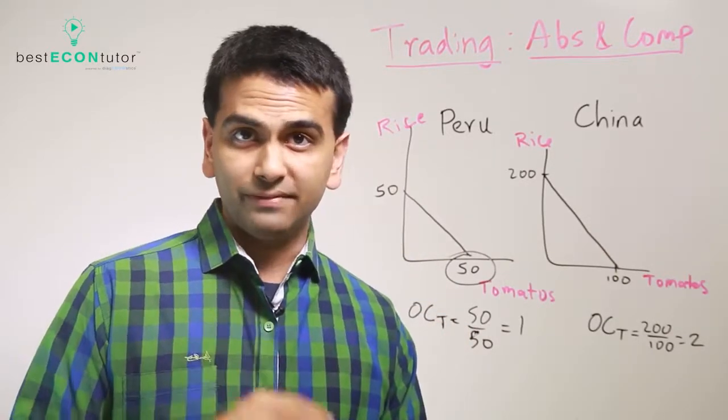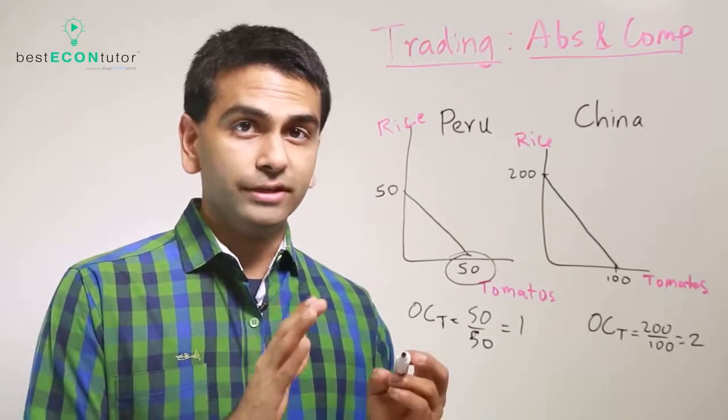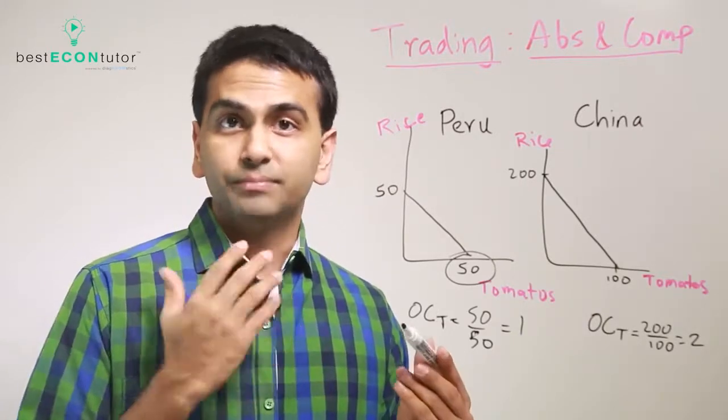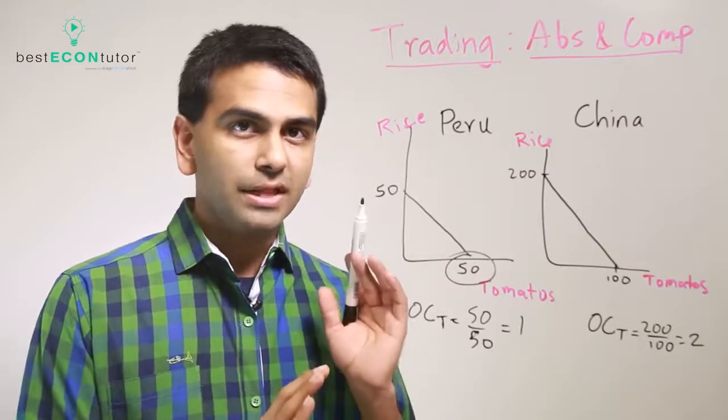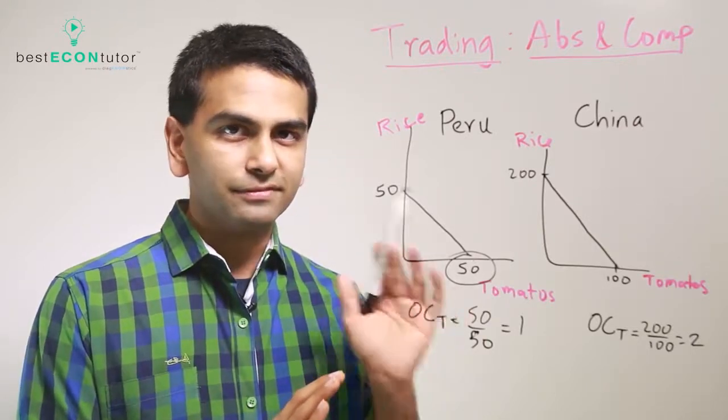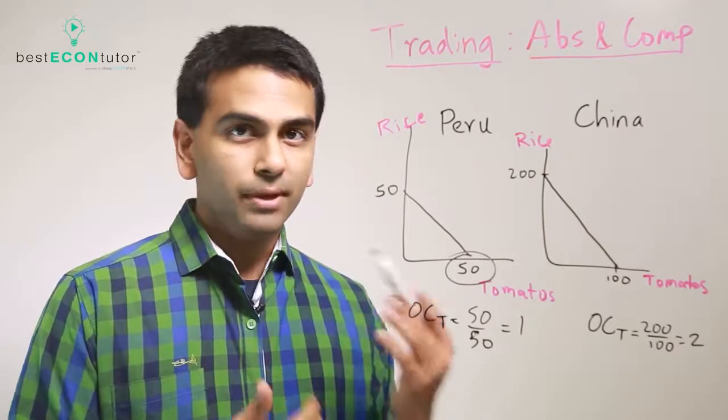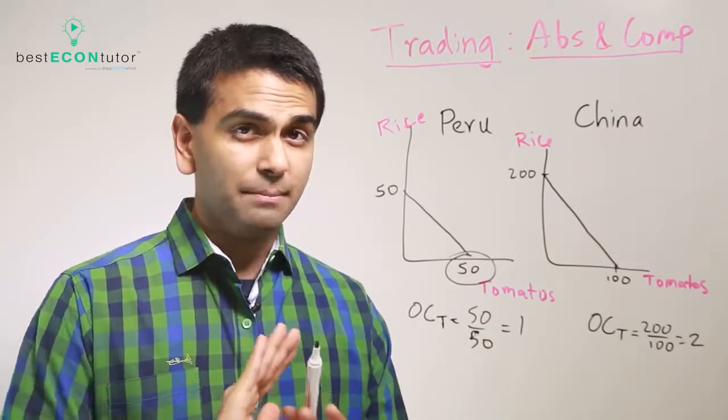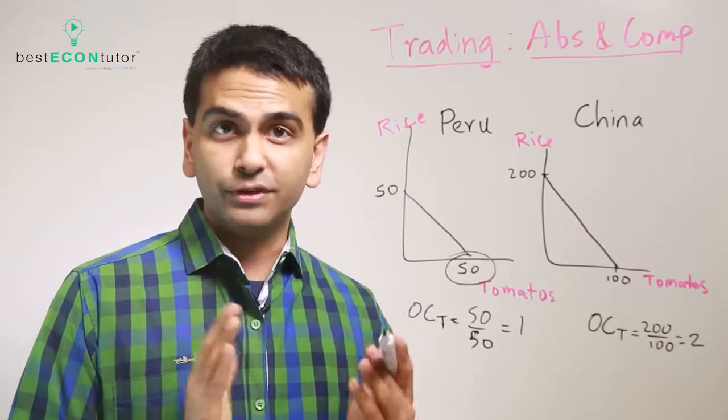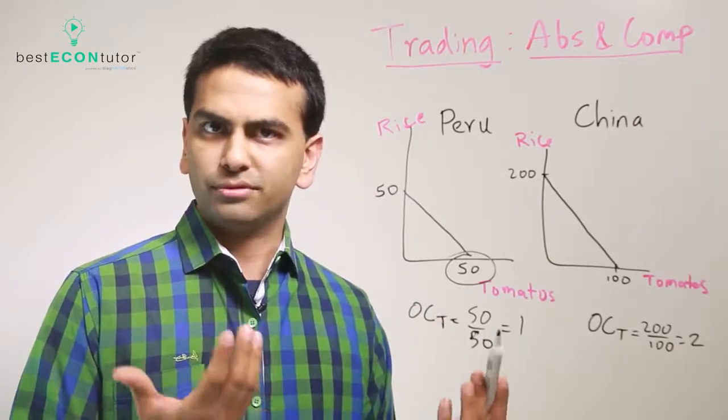Now the cool thing about comparative advantage is if you know that one country or one person has the comparative advantage for one good, the other person automatically has it for the other good. We could do the math to prove why, but that'll always be the case. So it's actually impossible mathematically for you to have the comparative advantage for both goods.